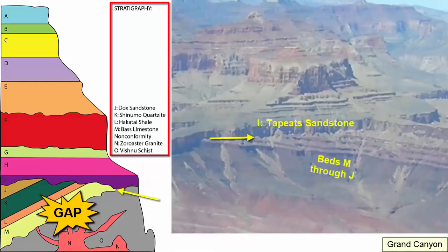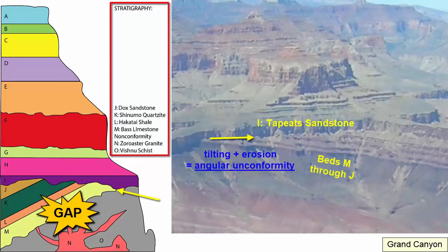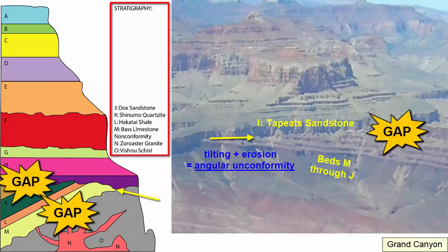The contact between J and the rocks above, I, is also irregular, indicating erosion. Furthermore, the rocks below the contact are at an angle to those above — here we see evidence of a tectonic event that tilted the rocks, after which the area was eroded flat and deposition began again with I. So between J and I, we have an angular unconformity.